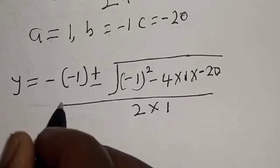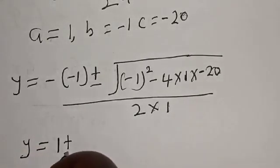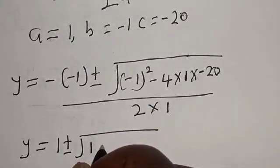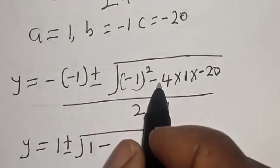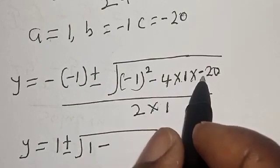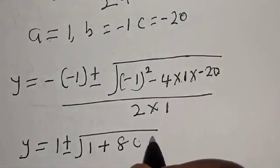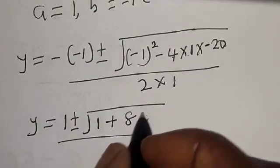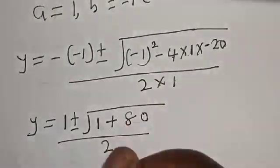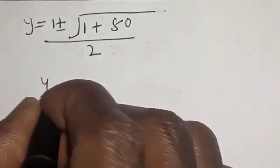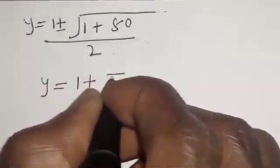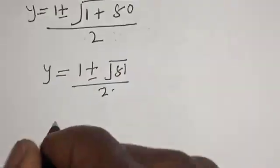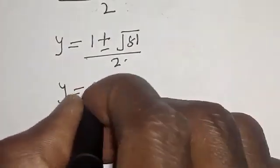Now, y equals negative of negative 1, plus or minus square root of negative 1 squared minus 4 times 1 times negative 20, all over 2. That gives us y equals 1 plus or minus square root of 1 plus 80, over 2, which is y equals 1 plus or minus square root of 81, over 2.